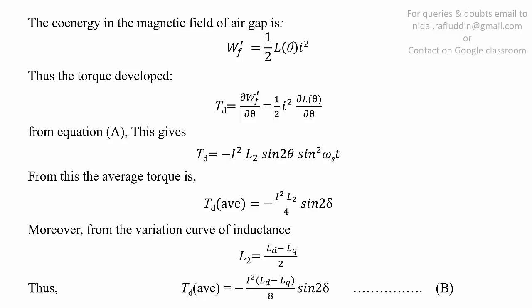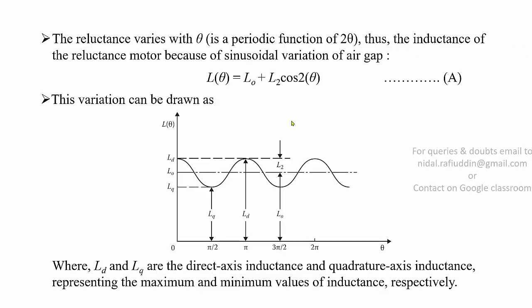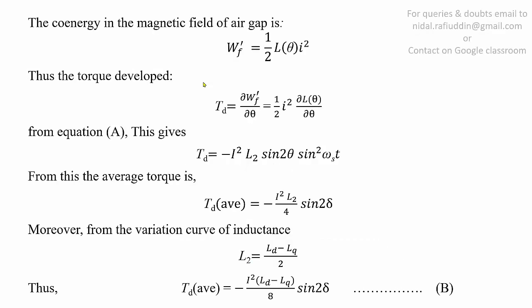We write the co-energy in the magnetic field of the air gap as wf' = ½·L(θ)·i². Since L is a function of θ, we have wf' = ½·L(θ)·i². The developed torque is thus T_d = ∂/∂θ of wf', which comes out to be ½·i²·(∂/∂θ)·L(θ). From equation (a), L(θ) = L0 + L2·cos(2θ). Substituting this into the expression for T_d gives: T_d = −i²·L2·sin(2θ)·sin²(ωs·t).